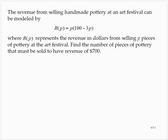The revenue from selling handmade pottery at an art festival can be modeled by R(p) equals p times 100 minus 3p, where R(p) represents the revenue in dollars from selling p pieces of pottery at the art festival. Find the number of pieces of pottery that must be sold to have a revenue of $700.